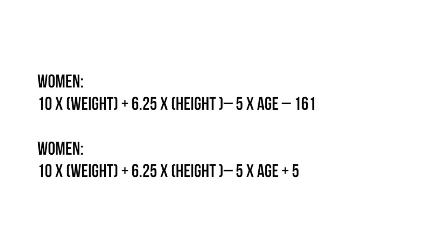The Mifflin St. Jour formula has some similarities with the Harris-Benedict equation — it takes into consideration your age, height, weight, and gender. The MSJ formula is broken up into two categories: male and female. However, the weight is in kilograms, not pounds; the height is in centimeters, not inches; and the age is in years. Knowing how to convert pounds to kilograms and height into centimeters is imperative for this equation.